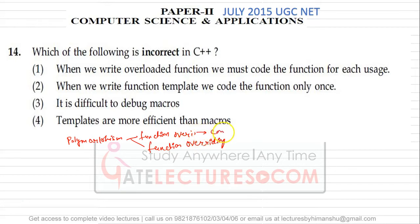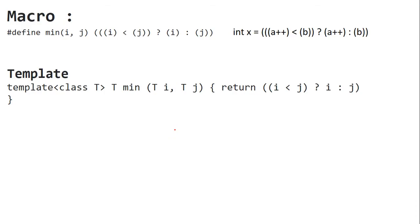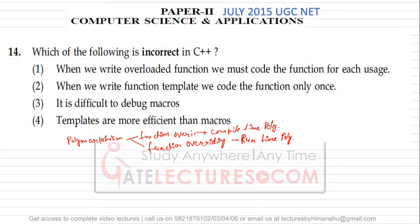According to polymorphism, we can implement it in two ways: function overloading and function overriding. Function overloading is called compile-time polymorphism, and function overriding is called runtime polymorphism — also known as static polymorphism and dynamic polymorphism. In function overloading, we construct functions with the same name.